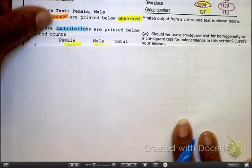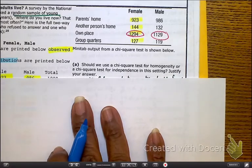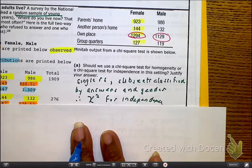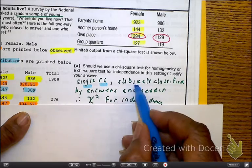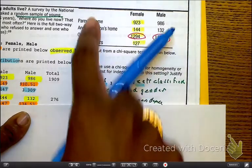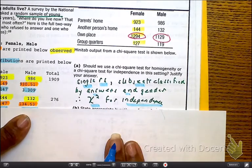So question number one. Should we use a chi-squared test for homogeneity? Sorry, I tried to stop that cough. So we have a single random selection, and the subjects here are classified by answer. So we can see here are their answers. And therefore, yes, we can use a chi-squared for independence.